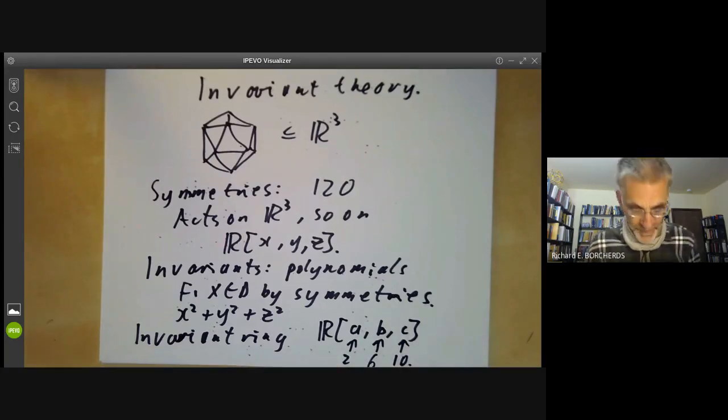One particularly important question is, is the ring of invariants finitely generated? It means, can you find a finite number of invariants such that any other invariant is a polynomial in those? This was a really fundamental problem in invariant theory back in the 19th century.